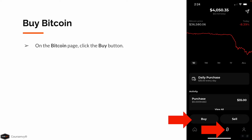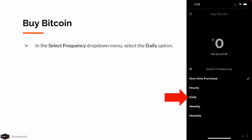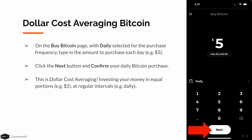On the Bitcoin page, click the Buy button. On the Buy Bitcoin page, click the Purchase Frequency option — the default is One-Time Purchase. In the Select Frequency drop-down menu, select Daily. Now back on the Buy Bitcoin page, Daily is selected for the Purchase Frequency. Type in the amount to purchase daily automatically — we'll choose $5. Click the Next button and confirm your daily Bitcoin purchase. This is dollar cost averaging: investing your money in equal portions, $5, at regular intervals, daily.